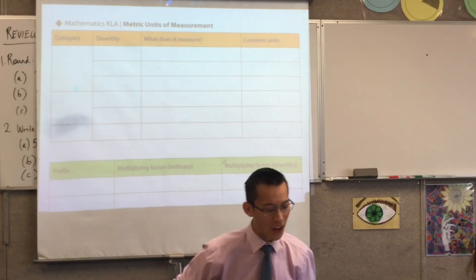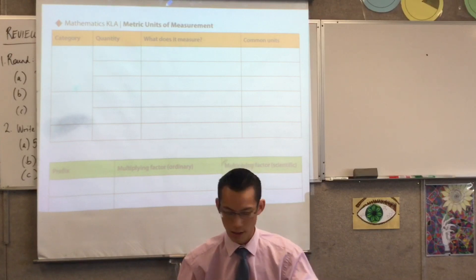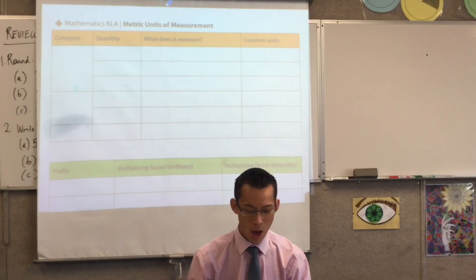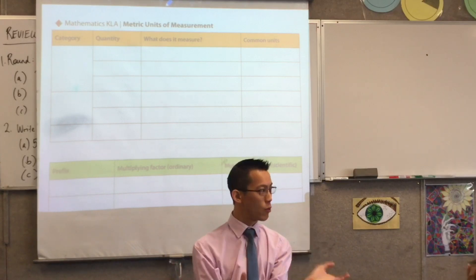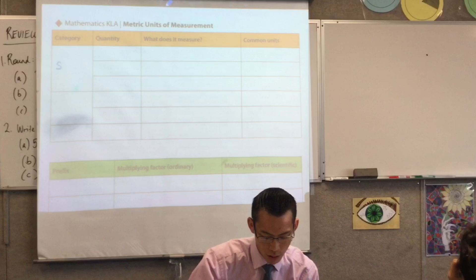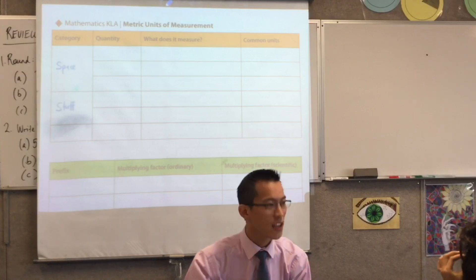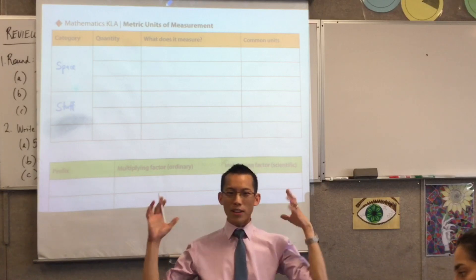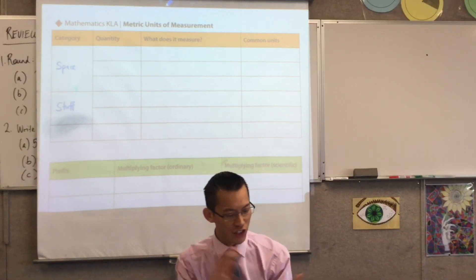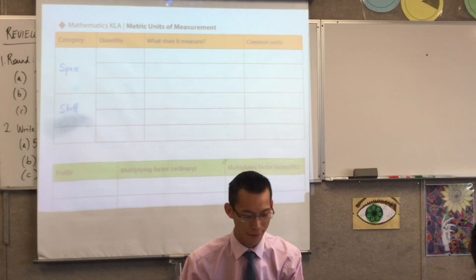This table here, we're going to talk about all the different things we're going to try and measure and give an introduction to these units. The first thing you need to know is that basically we've got two types of things we want to measure, and then lots of different sub-ways of doing that. The two things we want to measure are space and stuff.